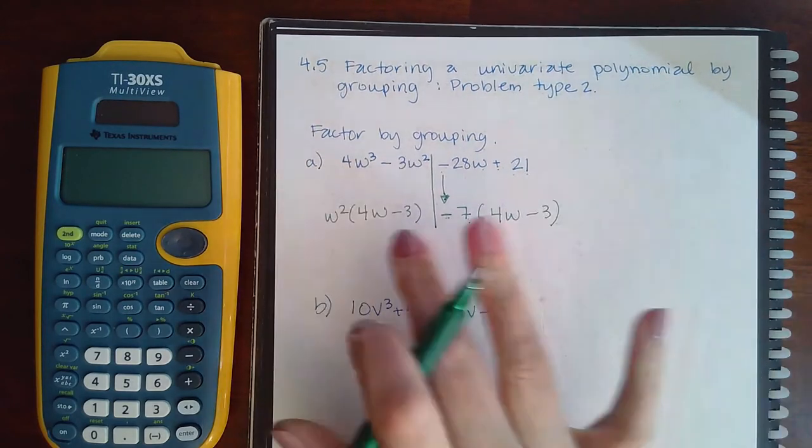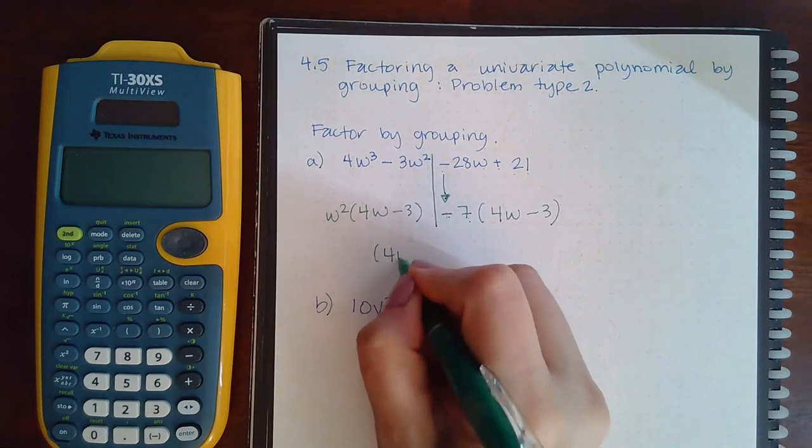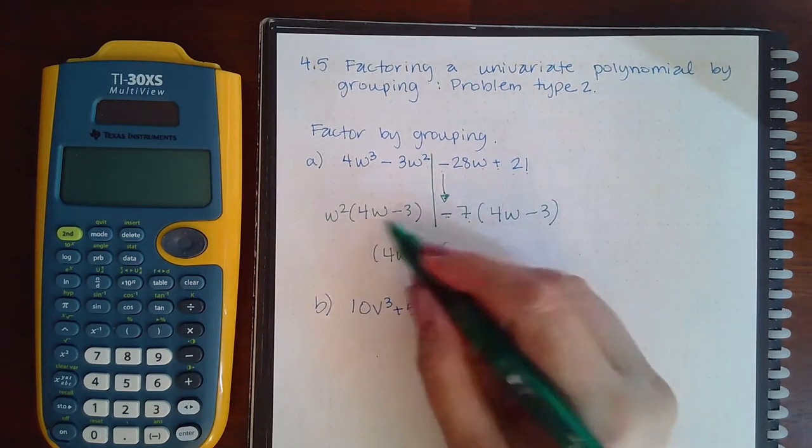So I can factor out that common binomial, and when I take those out I'll be left with w squared minus 7. And this is the factorization.